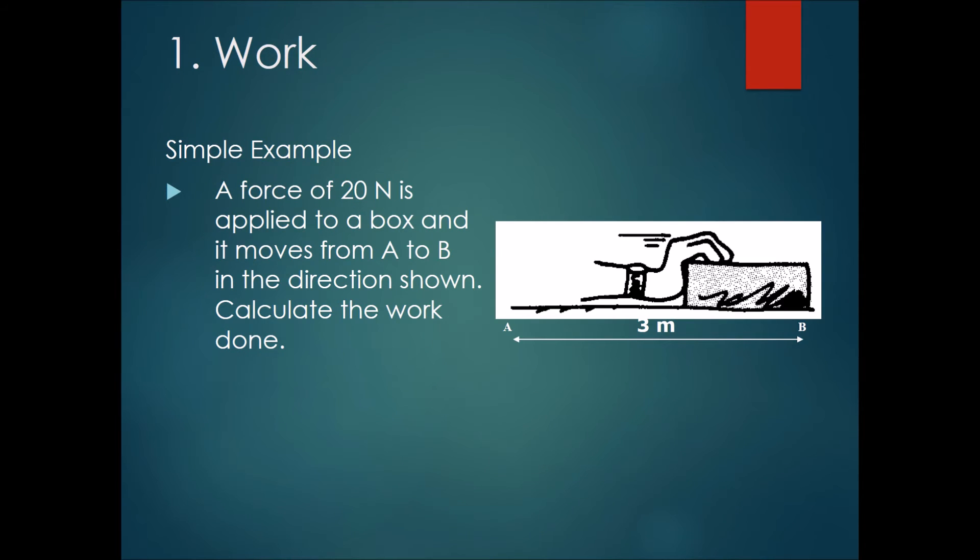Alright, now let's try a simple example. A force of 20 newtons is applied to a box and it moves from A to B in the direction shown. The force in this case is to the right. Calculate the work done. Please pause the video here and complete the question.